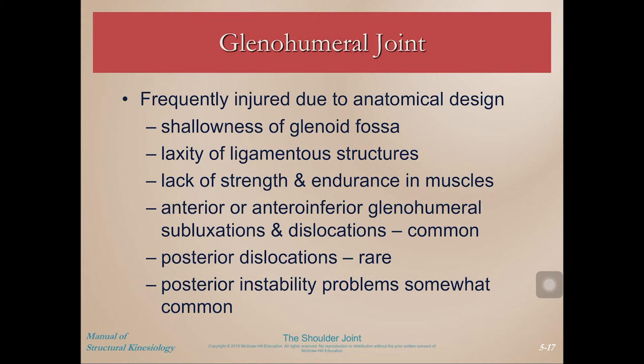Because this anatomical design favors mobility and sacrifices stability, we tend to get a lot of shoulder injuries. Recall that it's due to the shallowness of the glenoid fossa, laxity in the ligaments, and a lack of strength and endurance — especially in the upper back musculature, the posterior deltoid, and rotator cuff muscles. These can fall into disuse without proper training or normal rigorous activities. If you're not hiking, climbing, throwing, weight training, or being generally active, that musculature will become weak and disused.